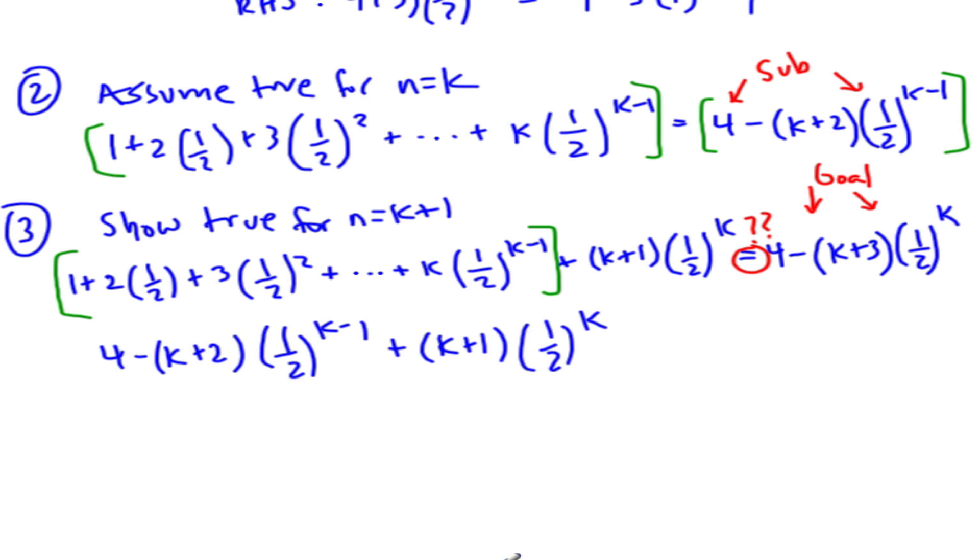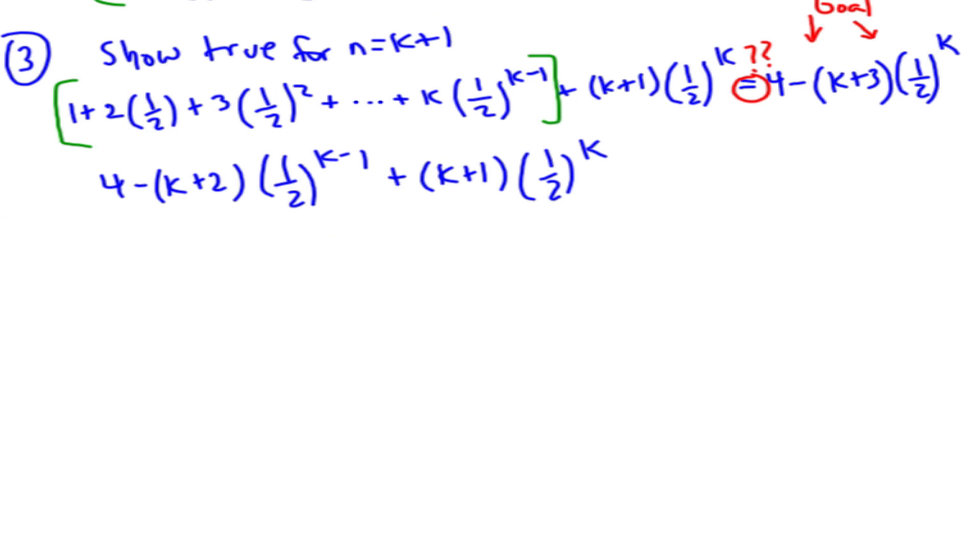All right, so now we're getting close to the step that I made a mistake on when I initially did this problem. So what I'm going to do is I'm going to break this up, this 1 half, 1 half to the k, and 1 half to the minus 1, plus k plus 1, 1 half to the k.